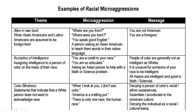These microaggressions form under the theme of color blindness, and it depends on the larger context. For a lot of people, saying 'America is a melting pot' can be seen as a microaggression because it denies a person's racial and ethnic experiences and cultural understandings. If you really think about the physical process of a melting pot — trying to melt things together to be one substance — for some people that can mean assimilation and having to strip themselves of their cultural identities.